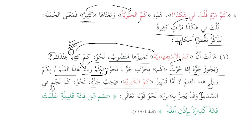Sometimes the tamyiz of kam al-khabariyya is majroor because of min: 'Kam min fi'atin qalilatin ghalabat fi'atan kathiratan bi-idhni Allah' — how many small groups overcame large groups by Allah's permission. When we have min after kam al-khabariyya, the noun will of course be majroor. Whether we have min or not, the tamyiz of kam al-khabariyya will always be majroor.